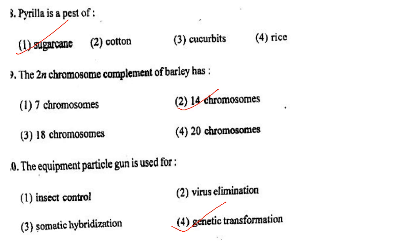Next one: The 2N chromosome complement of barley has option 1, 7 chromosomes; option 2, 14 chromosomes; option 3, 18 chromosomes; option 4, 20 chromosomes. Answer is option 2: 14 chromosomes.